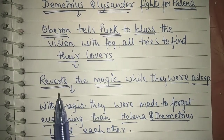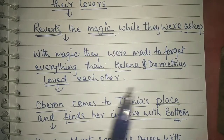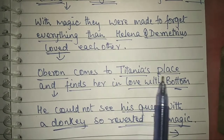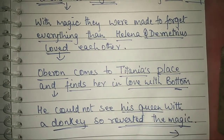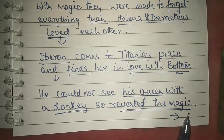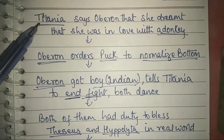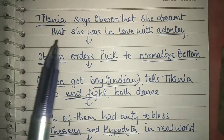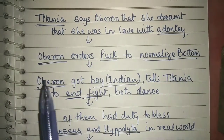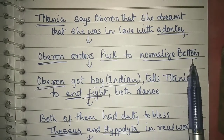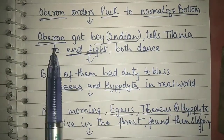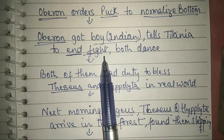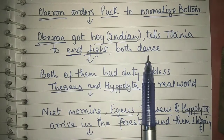During their sleep, the magic was reverted back and they were made to forget everything. Helena and Demetrius now loved each other. Oberon comes to Titania's place and finds her in love with Nick Bottom. Unable to see his queen with a donkey, he reverts the magic and normalizes her as well. Titania, unaware of the magical spell, tells Oberon that she dreamt she was in love with a donkey. Oberon orders Puck to normalize Nick Bottom as well. Oberon had already obtained the Indian boy, so there was no more problem with Titania. He asks her to end the fight, she agrees, they dance together, and everything is fine between them.